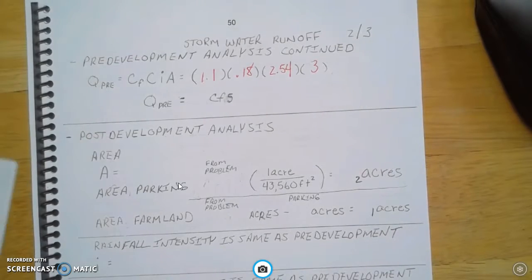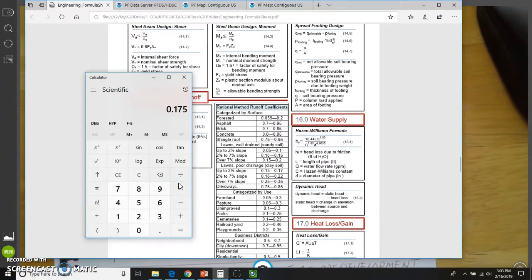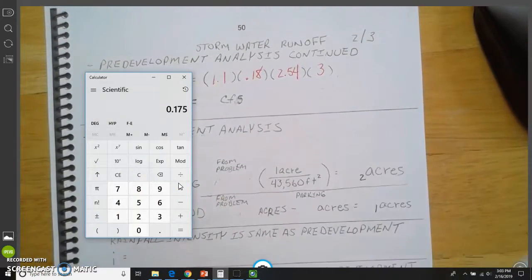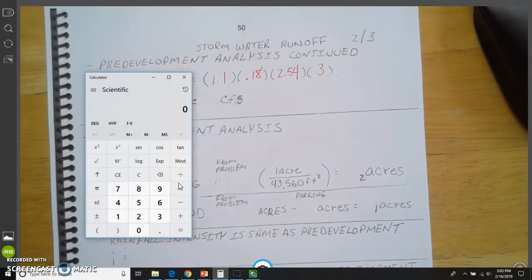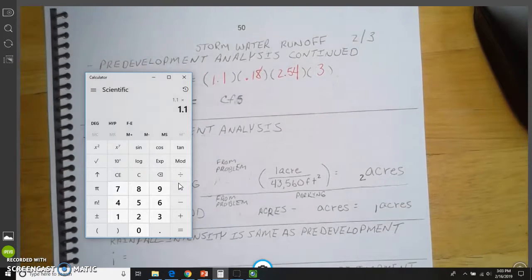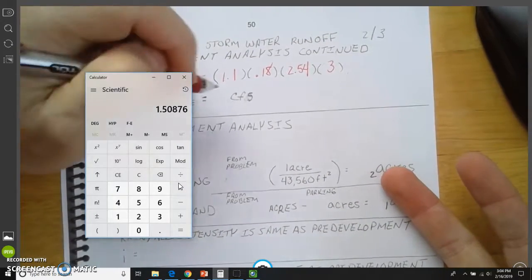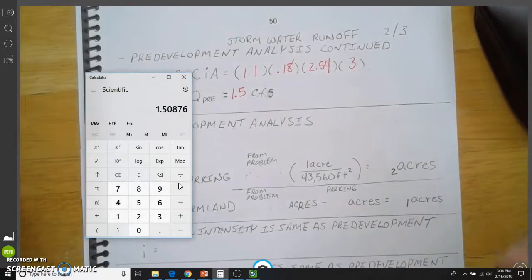So let's get the calculator going here. Here we go. I get the calculator. Here it is. I'll put this back up. So you can see this all happening. I'm going to put in 1.1 times 0.18 times 2.54 times 3 equals. And again, we're just going to round this, and this is going to become 1.5 cubic feet per second. So this is pre-development.